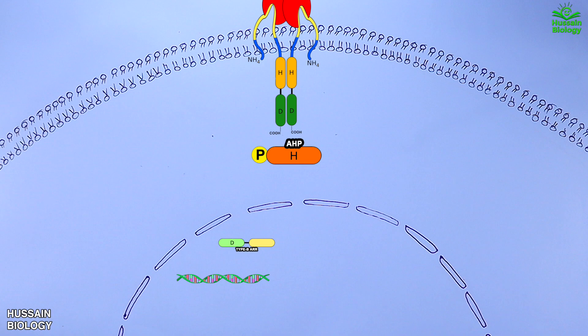This phosphate is received by the conserved histidine present on the AHP protein. Now from here, the phosphorylation causes the AHP protein to move into the nucleus as shown in the diagram. Within the nucleus, the AHP transfers the phosphate to an aspartate residue located within the receiver domain of type B ARR.